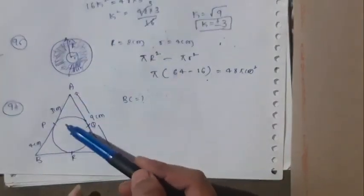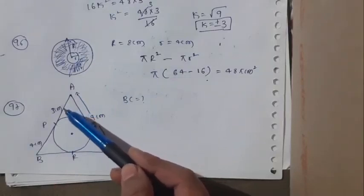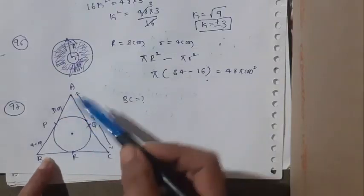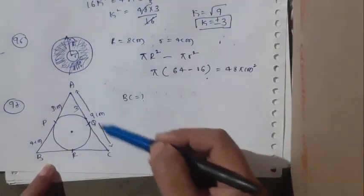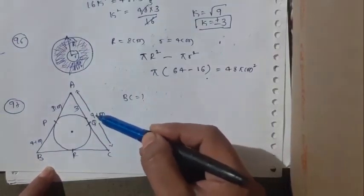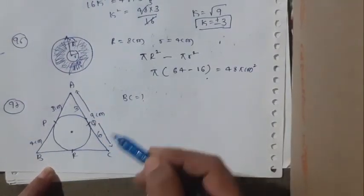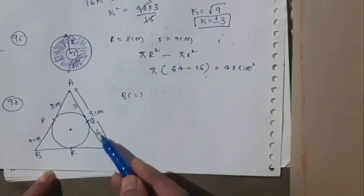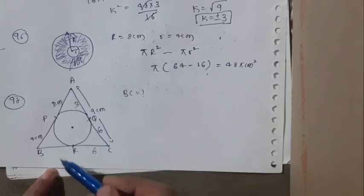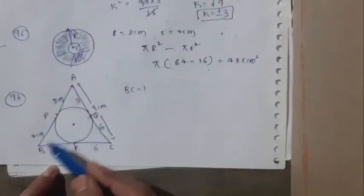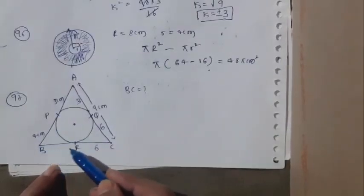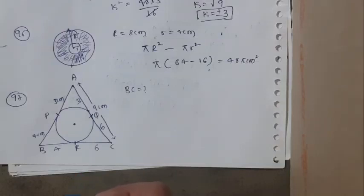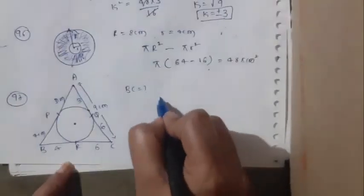From an external point, two tangents drawn to a circle are equal in length. Point Q is external; QC and RC are tangents from the same external point, so their lengths are equal — QC = 6 cm. From point B, two tangents are drawn and their lengths are equal — that length is 4 cm. Therefore BC = 6 + 4 = 10 cm.